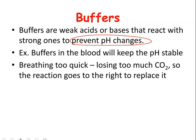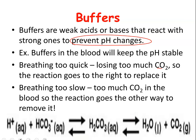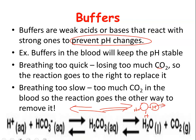If you breathe too fast, you exhale too much carbon dioxide and it makes a certain reaction go one way. If you breathe too slow, there's too much carbon dioxide in the blood, and the reaction goes the other way. But either way, a buffer would try to keep everything stable — it could either pick up hydrogens if there are too many, or give them away if there aren't enough. Just know that buffers prevent pH changes by either adding in hydrogens if there's not enough, or taking them away if there are too many.